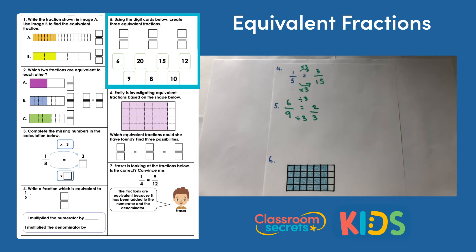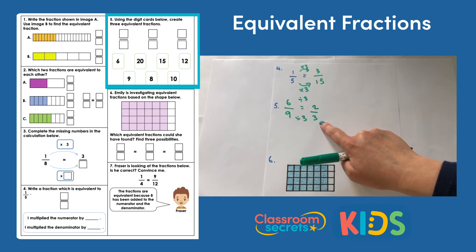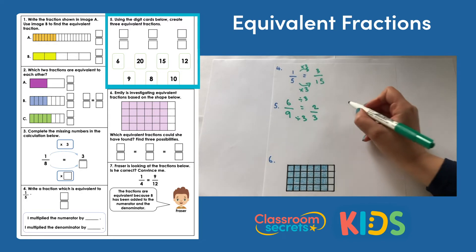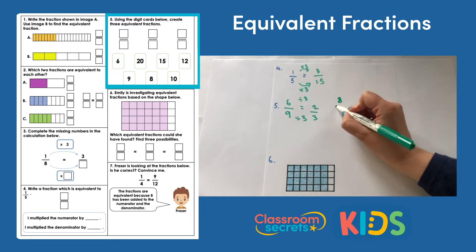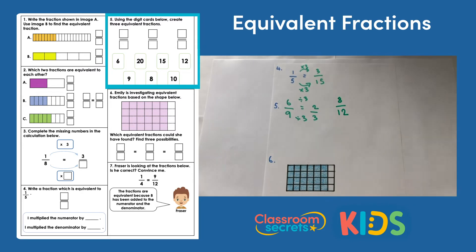I can then look at the relationships between the other numbers to see if it looks like they could be my answer. So now I'm looking at 2 thirds. I know that I can multiply my denominator by 4 to get 12. And if I multiply my numerator by 4, I'll get 8 and I have 8 and 12 available. So another option could be 8 twelfths.